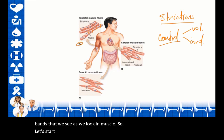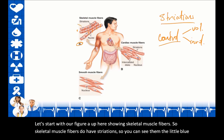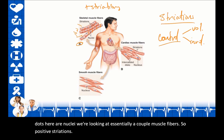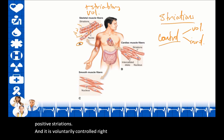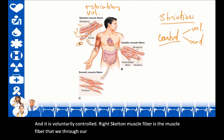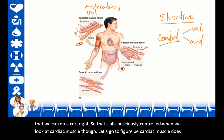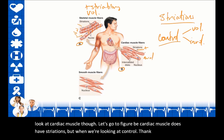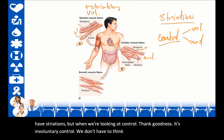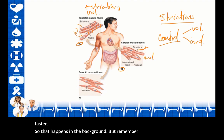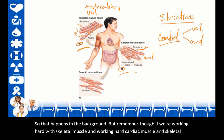Skeletal muscle fibers have striations, visible as bands, and the little blue dots are nuclei. Skeletal muscle is voluntarily controlled—through our thoughts we tell our arm to pick up a weight and do a curl. Cardiac muscle also has striations, but it is involuntarily controlled. We don't have to think about our heart beating 24 hours a day. When we work hard with skeletal muscle, it gets to rest, but cardiac muscle does not.